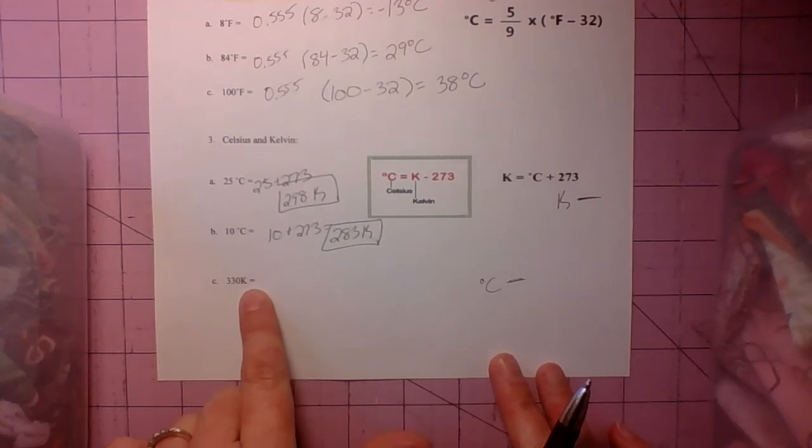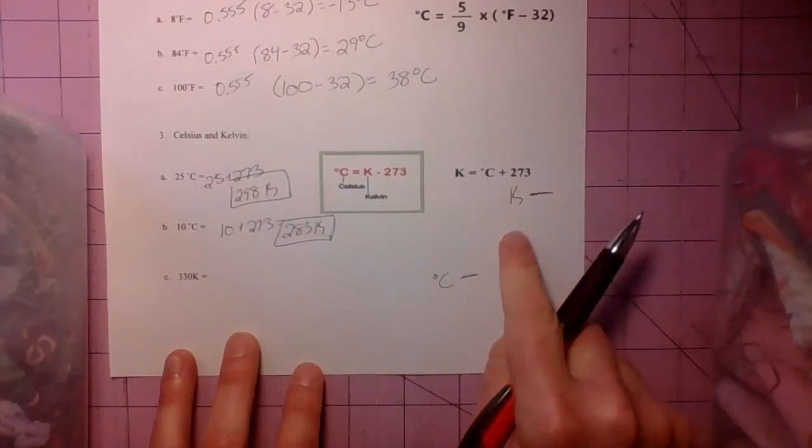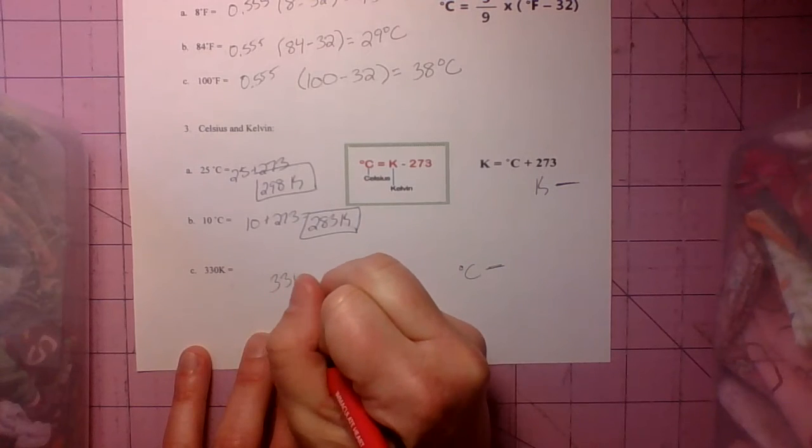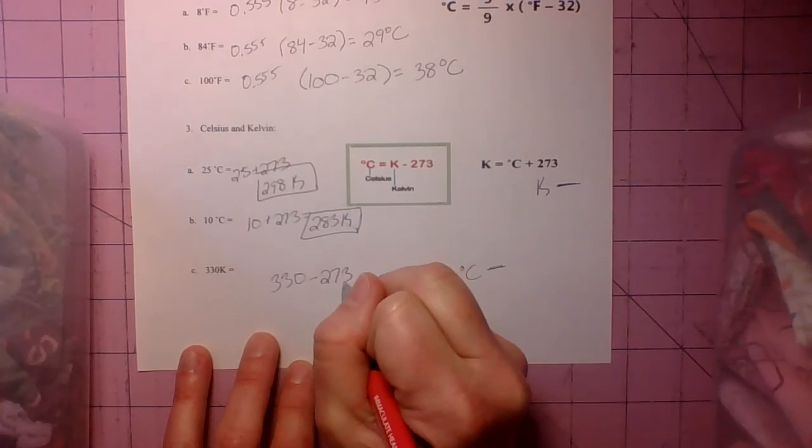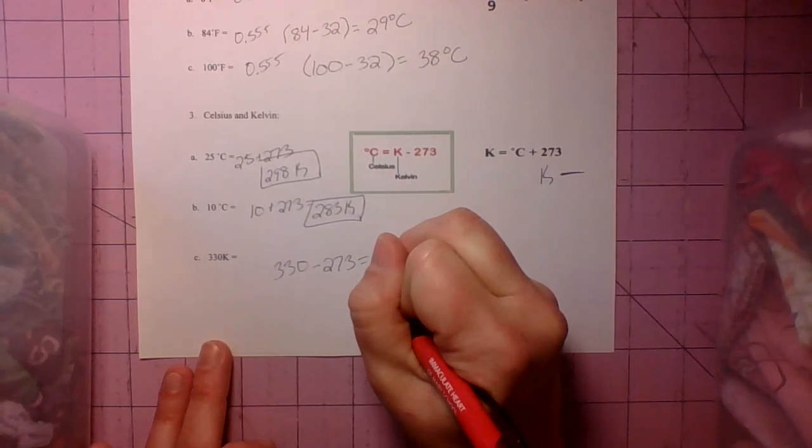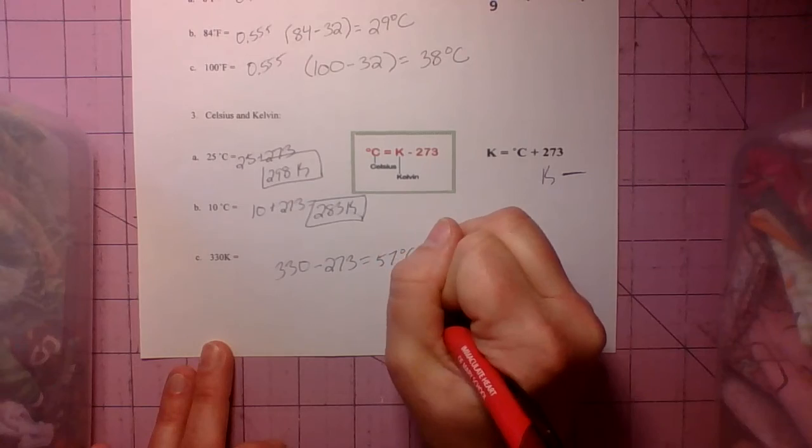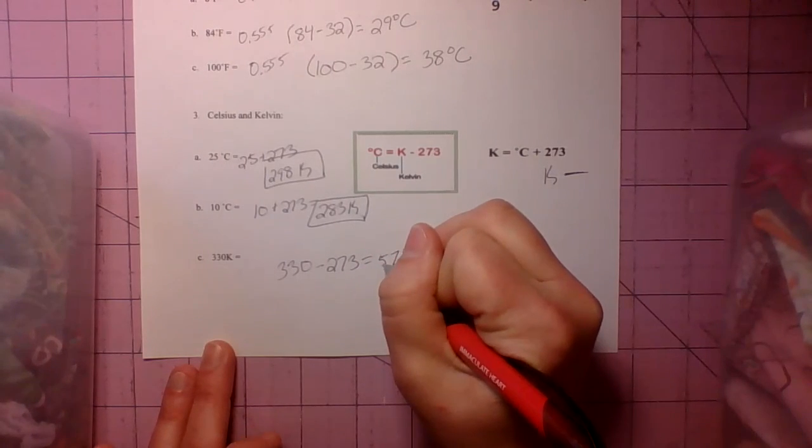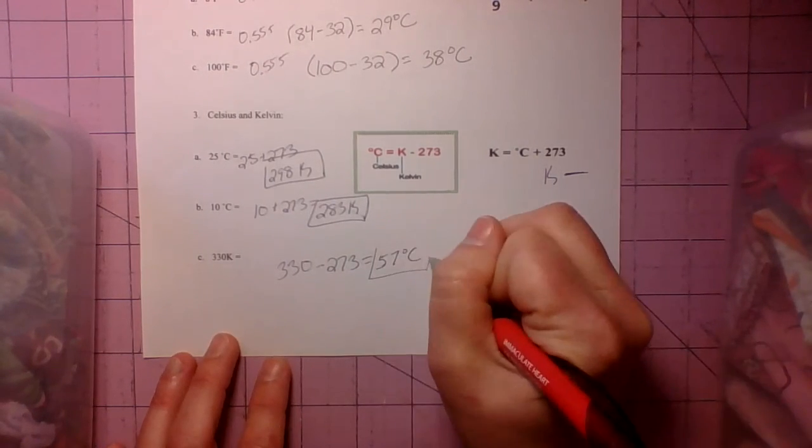Now we start with Kelvin and we go down to Celsius. So we know we subtract. So 330 minus 273. And we get 57. Now we bring back that degree sign, 57 degrees Celsius.